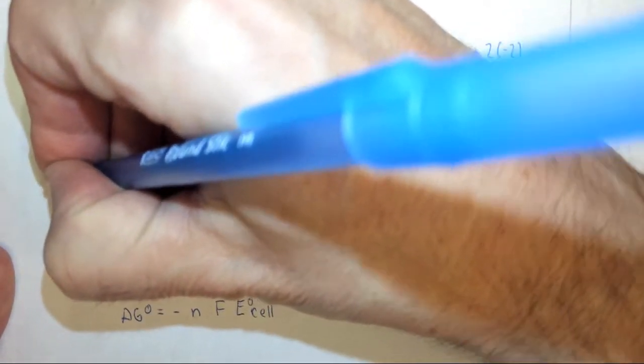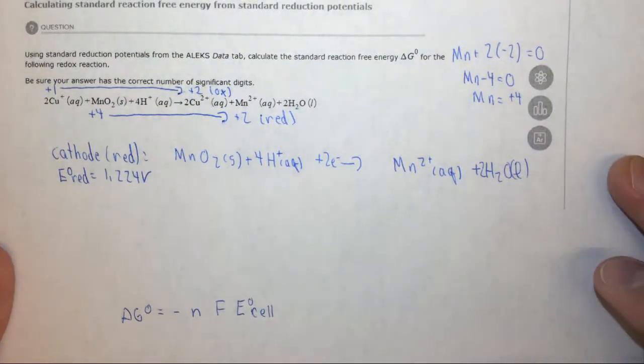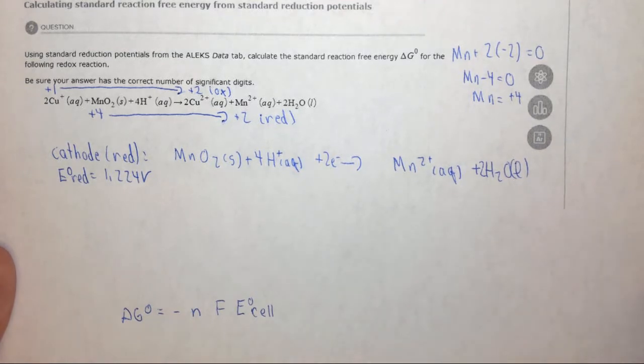If we look up the standard reduction potential of that reaction in the table, we find that it's equal to 1.224 volts. So this is the reaction that's occurring.